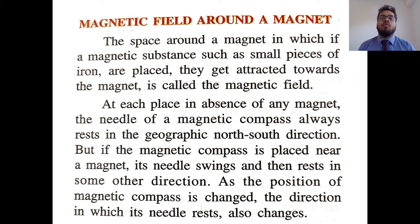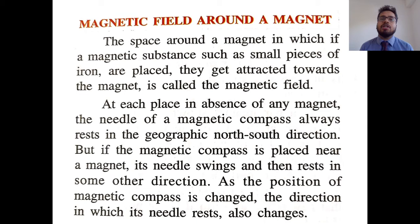Wherever a magnet is kept, the space around it in which a magnetic substance — such as any small piece of iron, cobalt, or nickel — feels the attraction force towards the magnet is known as the magnetic field. When you bring a piece of iron near a magnet, after crossing a certain area you feel the attraction force, but beyond that area you do not feel it. That certain space where the magnetic attraction force is experienced is known as the magnetic field.